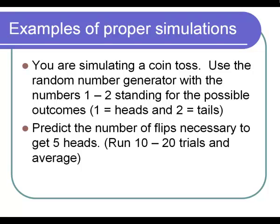It's under math, probability, and it's number 5, random int. And you want to do 1 comma 2. That means generate a number between 1 and 2.